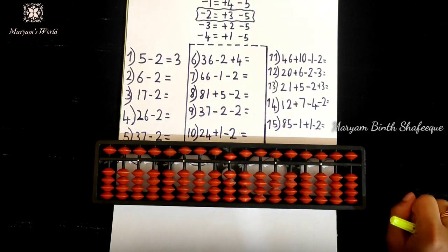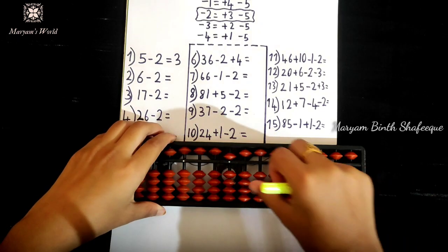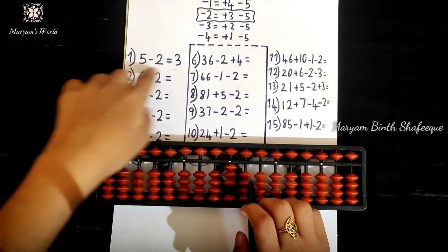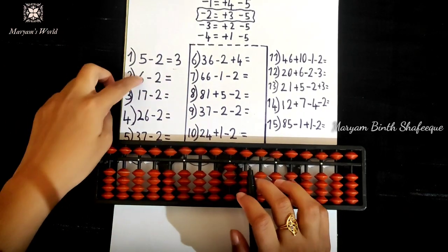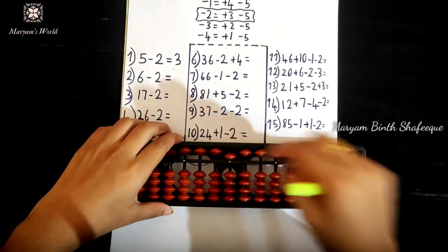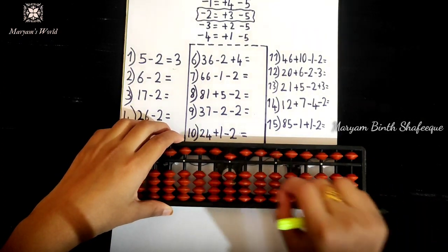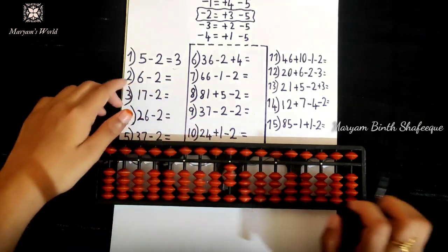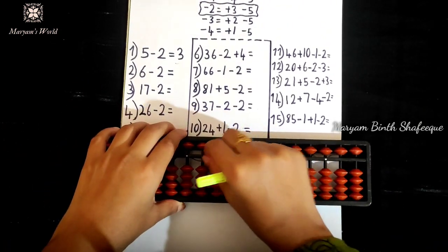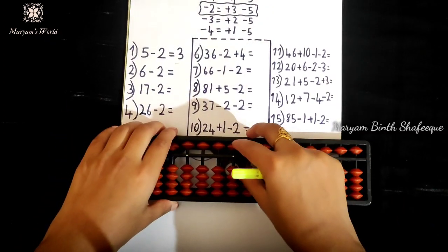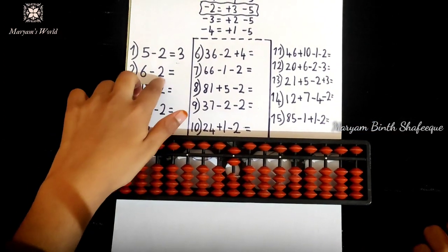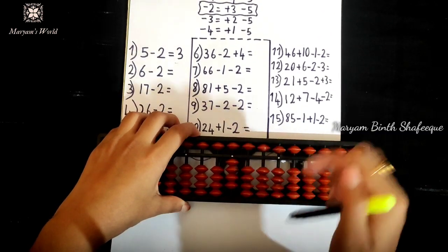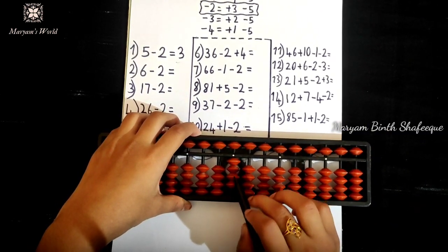Minus 2 minus 2 minus 2 equals plus 3 minus 5. 5 minus 2 minus 2 minus 2 equals plus 3 minus 5. Next: 6 minus 2 minus 2, because minus 2 equals plus 3 minus 5. That gives 4. Count: 1, 2, 3, 4.